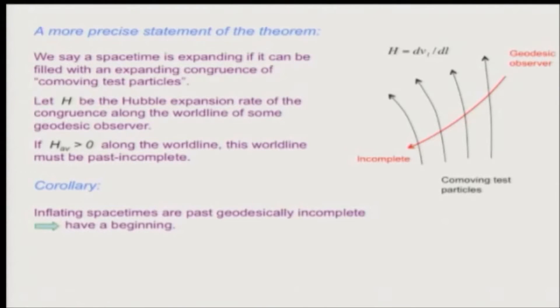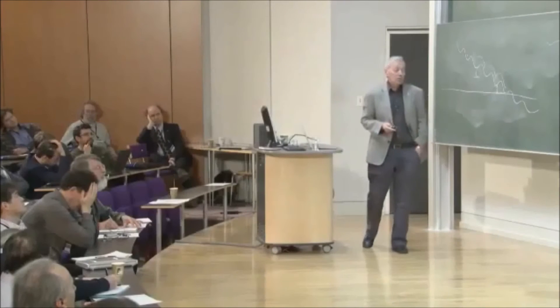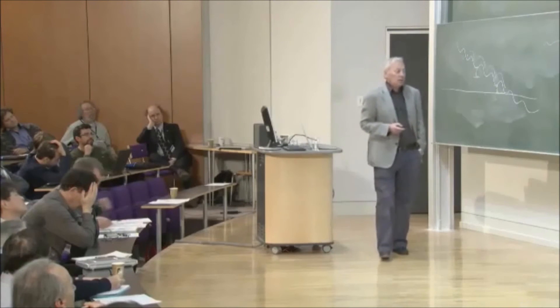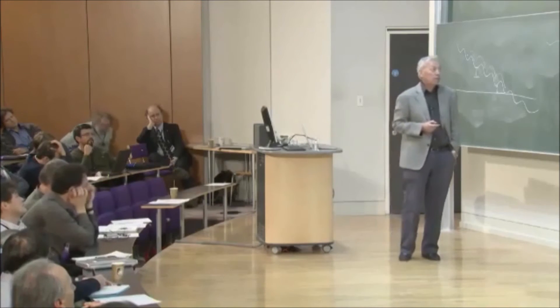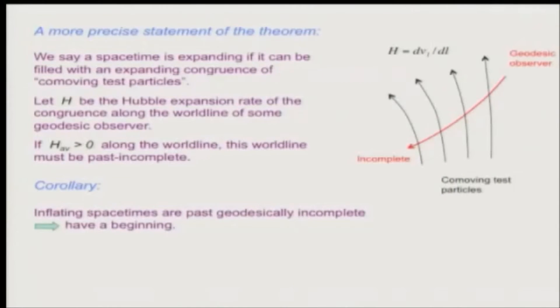Now, I want to denote H, the Hubble expansion rate of the congruence, in the direction of motion of the observer. I'm not assuming that the spacetime is isotropic, so the expansion rate may be different in different directions. So that's why I specify the direction. And then the theorem statement, now with these definitions, is very simple: if the Hubble expansion rate averaged over this worldline is positive, then the worldline cannot be past geodesically complete.